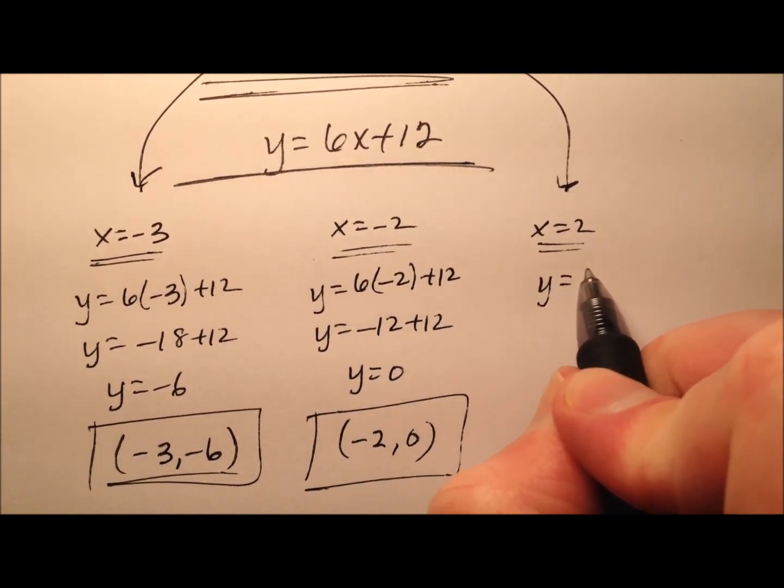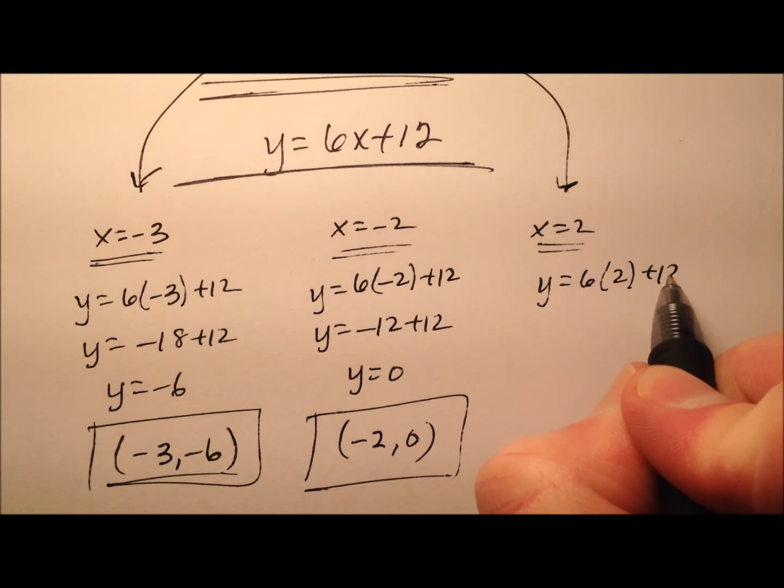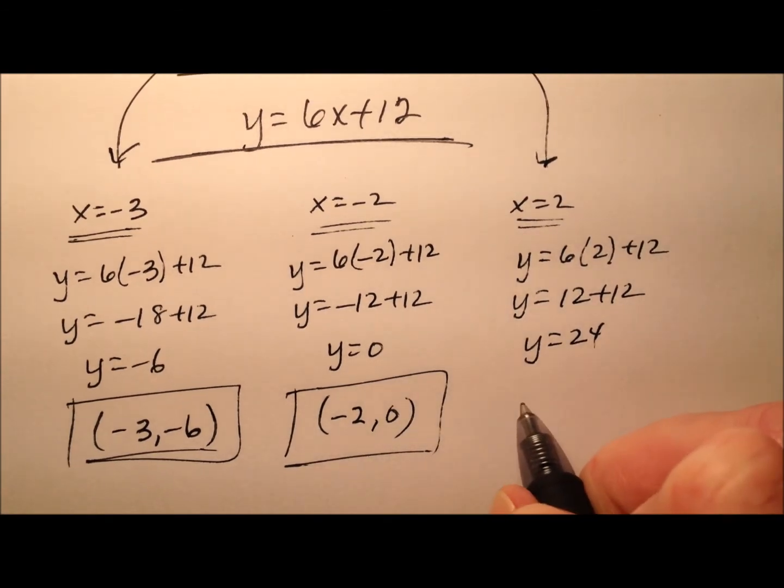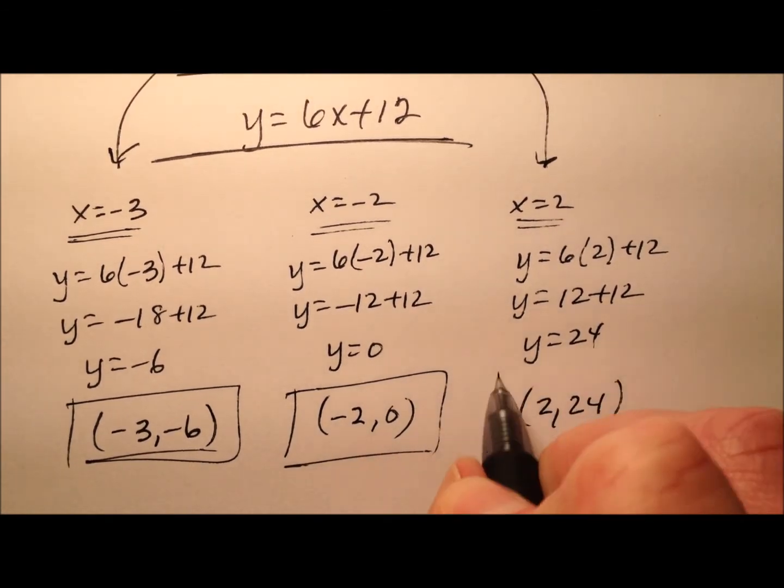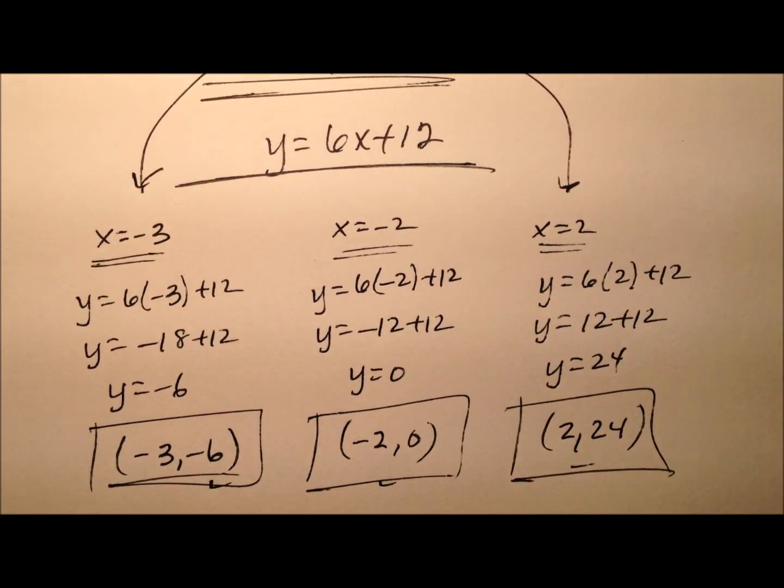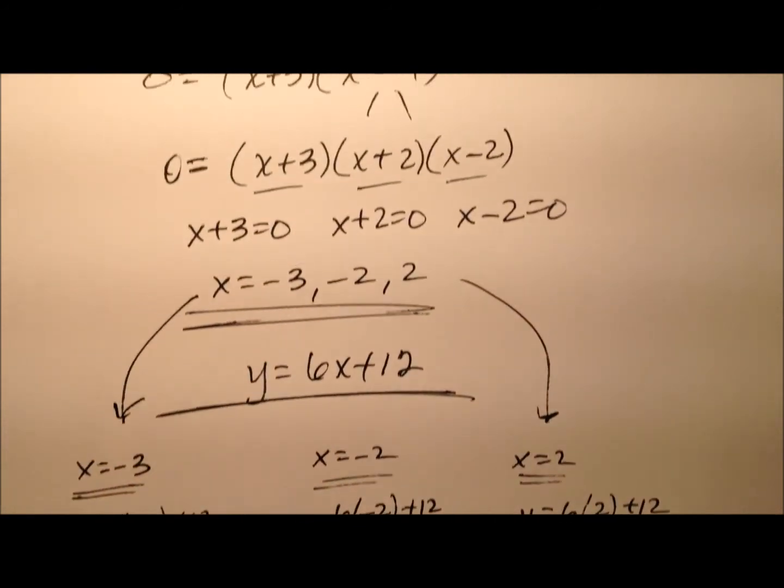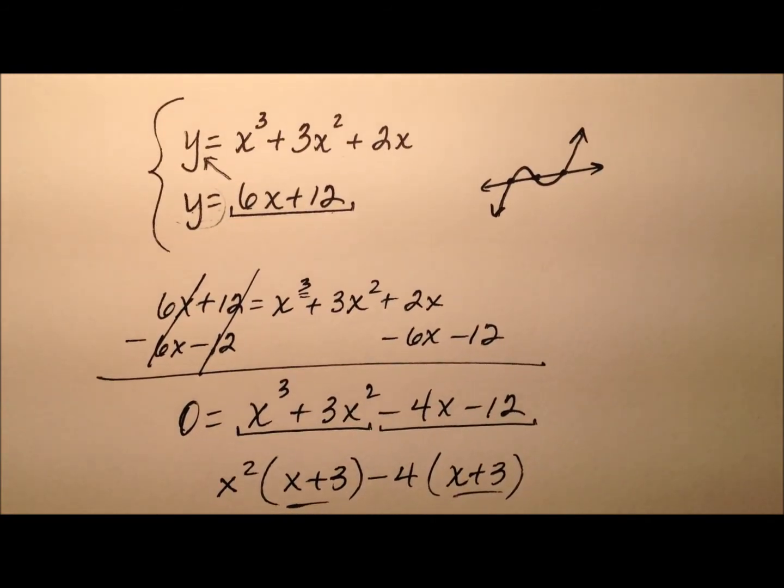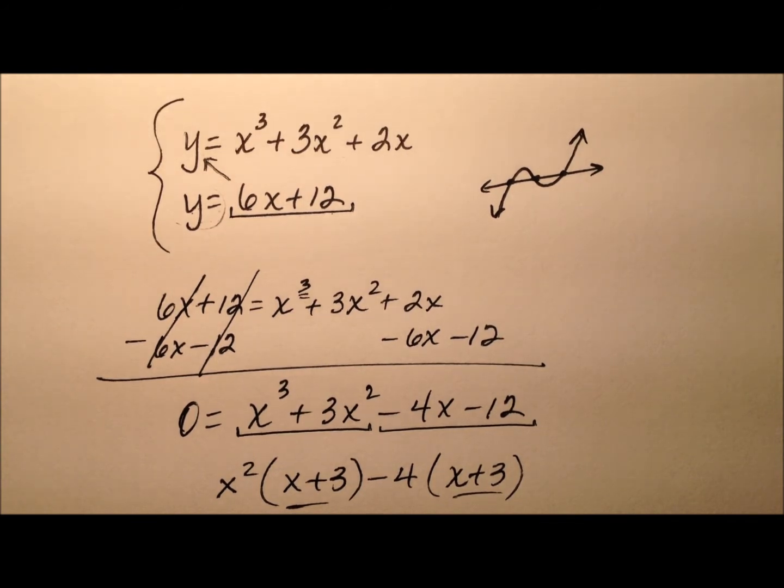And the final one, y equals 6 times 2 plus 12. So y equals 12 plus 12, y equals 24. So in this one we have 2, 24 for the final solution. So all three of these ordered pairs will ultimately be solutions to this initial system of nonlinear equations. And I would challenge you to go ahead and maybe go on Desmos or graph this somehow and just see the relationship that exists right here. But we did get three solutions.